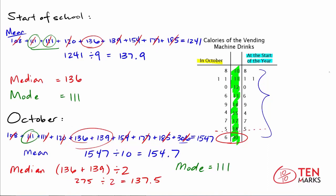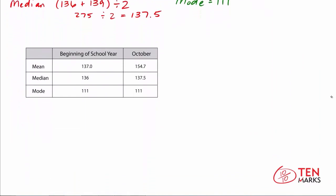Now let me show you a table that summarizes all the work we just did — the data for the beginning of the school year in the first column, and the data for October in the second column, categorized by mean, median, and mode. The extra data point for October was 306, which was far away from the other values. All other drinks had calories in the 100s, so 306 is pretty far away. We call this an outlier because it is so far away from the rest of the data. Let's see how this outlier affected the mean, median, and mode.